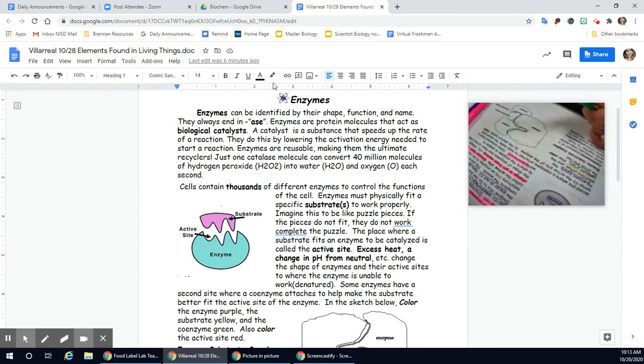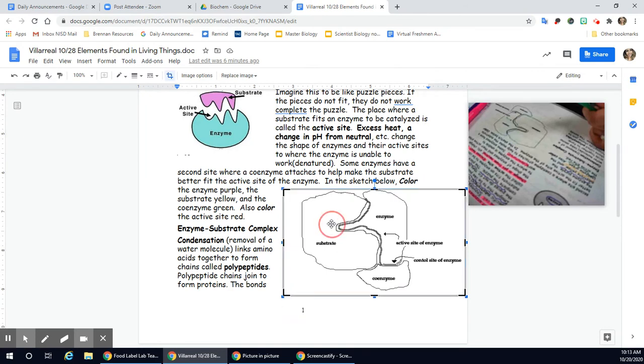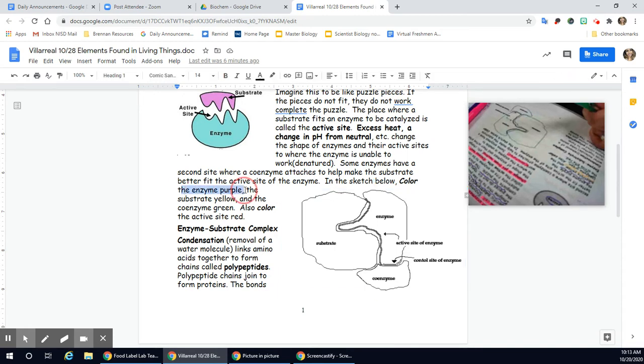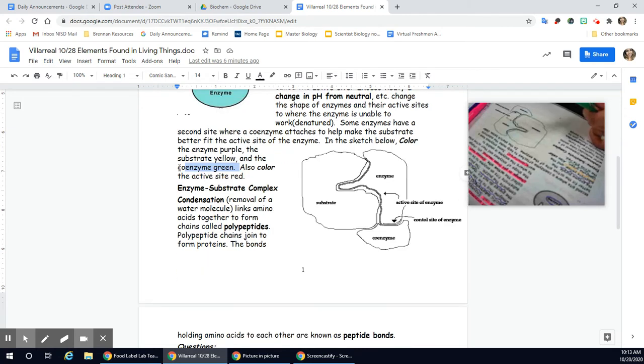And my coenzyme needs to be green. I'm going to go ahead and get me a green color. And you can do this in your Google Doc by using the little, I'm going to go over here to my Google Doc. You can use your highlighter, or you double click. You can double click this in your image options. But either way, that's fine. If you want to just highlight this enzyme is purple, substrate, yellow, coenzyme, green, that is fine. Your active site is asking for you to have it red. That's okay. So my active site I know is where they fit. So that's going to be in here, active site. My enzyme here is purple. My substrate is yellow. And I'm done there.